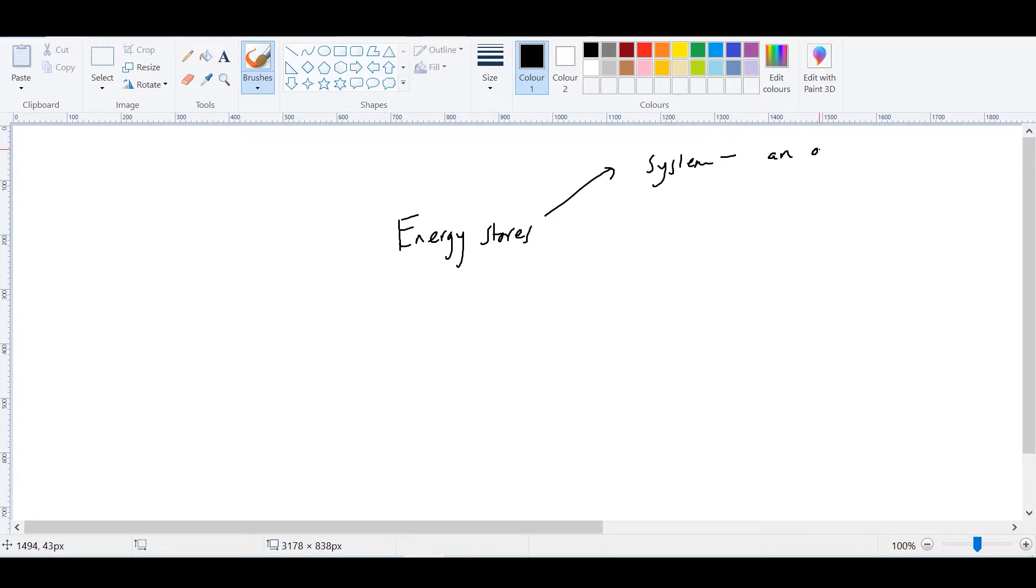An object or when a system changes, the way energy is stored also changes. They've given some examples there. So a ball rolling and hitting a wall - the system is a moving ball. When it hits the wall, the kinetic energy is transferred as sound energy.